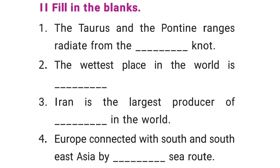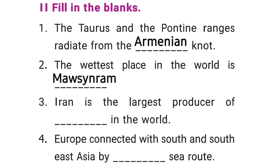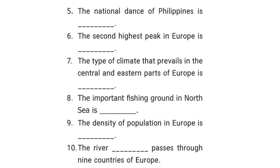The second section is fill in the blanks. Question 1: the Taurus and the Fountain ranges radiate from the dash node — answer: Armenian. Question 2: the wettest place in the world is dash — answer: Mawsynram. Question 3: Iran is the largest producer of dash in the world — answer: dates. Question 4: Europe connected with South and Southeast Asia by dash sea route — answer: Suez. Question 5: the national dance of Philippines is dash — answer: Tinikling.